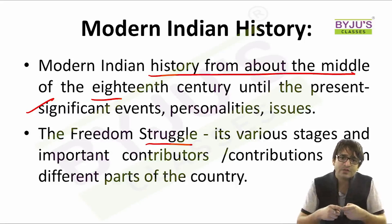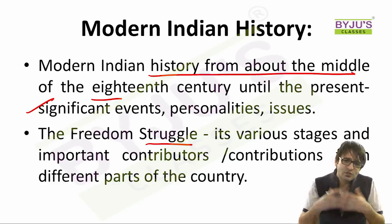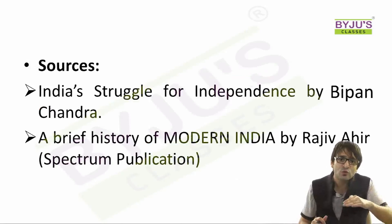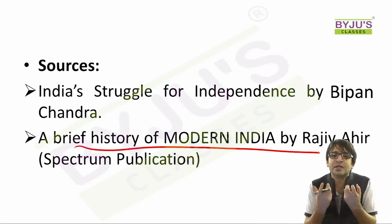If you have aligned your preparation focusing on both prelims and mains simultaneously, then this area is a cakewalk for you. In this area, I would suggest two important books: India's Struggle for Independence by Bipin Chandra. If you have not read this book, there is no need to — instead, you can pick up A Brief History of Modern India by Rajiv Ahir, which is a Spectrum publication book. This is where you can get all the relevant information regarding modern Indian history, period from 1707 to 1947.